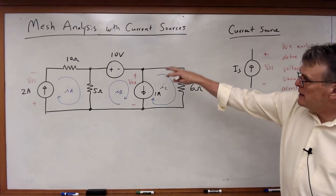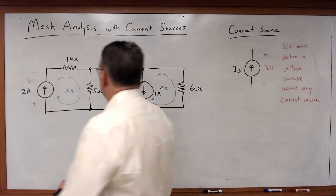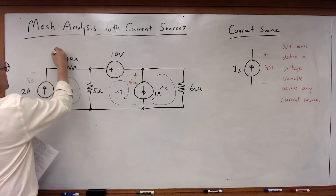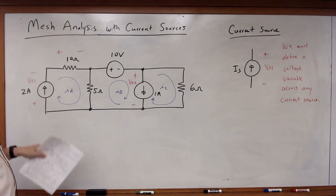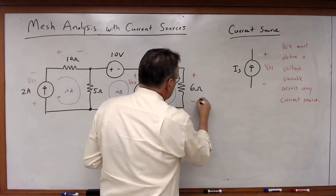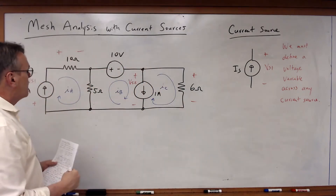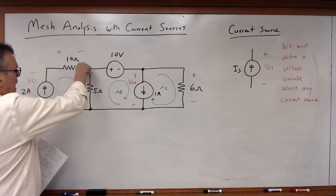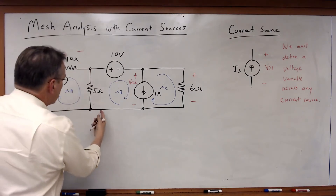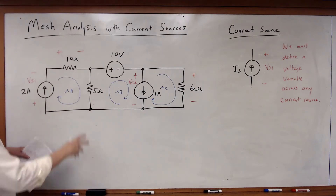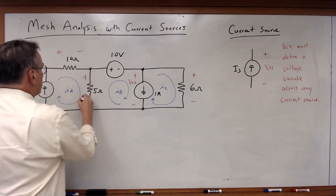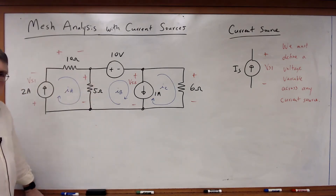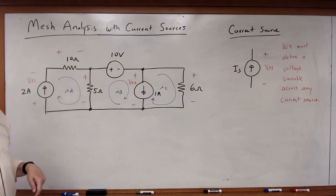Now let's go and select the voltage drops for the resistors. For Ia through this 10 ohm resistor, Ia alone is flowing through there, so the current direction and the passive sign convention set that voltage drop. For Ic, the passive sign convention sets that voltage drop. In this case I've got Ia entering the top and Ib entering the bottom — they're in opposite directions — so I'll arbitrarily pick that voltage drop across that resistor. It doesn't make a bit of difference which way I pick it.